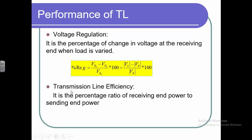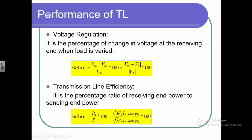The next thing is calculating the efficiency of the transmission line. The first parameter we talked about is voltage drop; the second one is about transmission line power loss. Efficiency is the ratio between the output power to the input power. Using these two parameters we can characterize the performance of the transmission line.